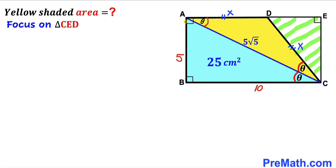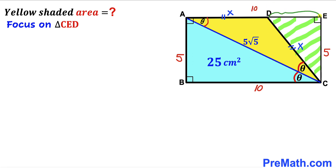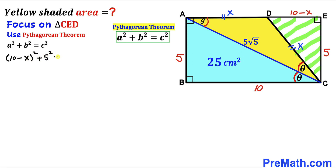We observe that side AB = 5, so EC = 5 as well. Since BC = 10, side AE = 10. Therefore DE = 10 − x. We now apply the Pythagorean theorem on this right triangle, where the hypotenuse is x and the other two sides are (10 − x) and 5: (10 − x)² + 5² = x².